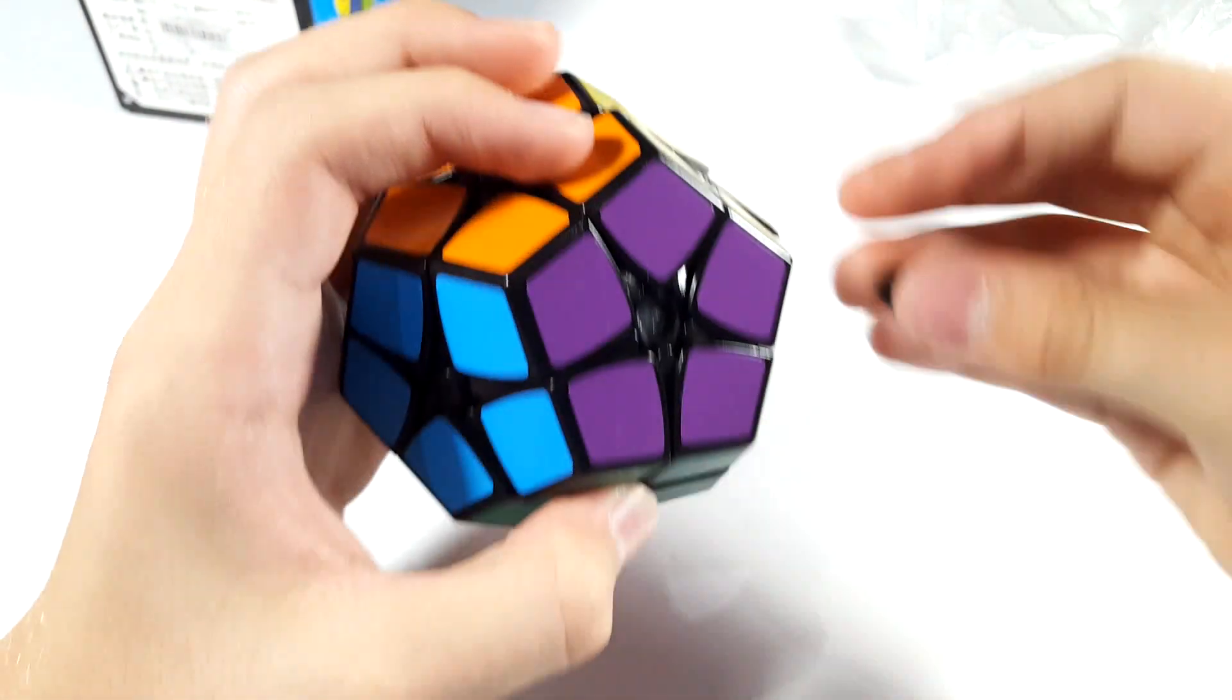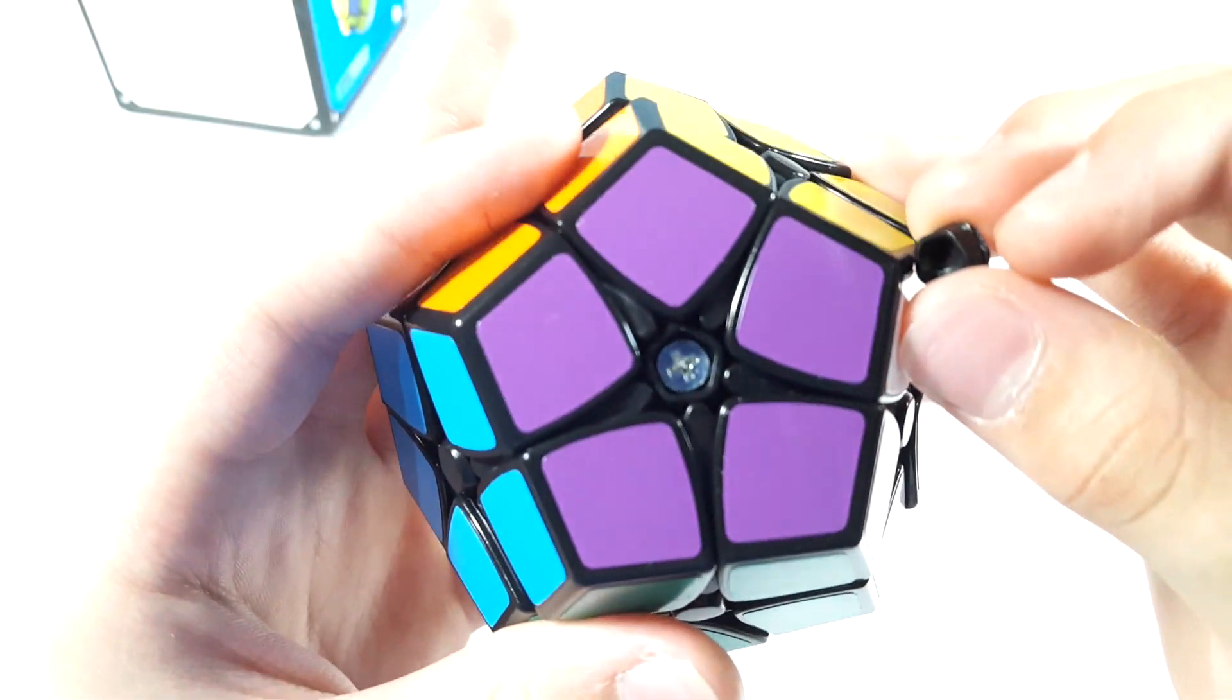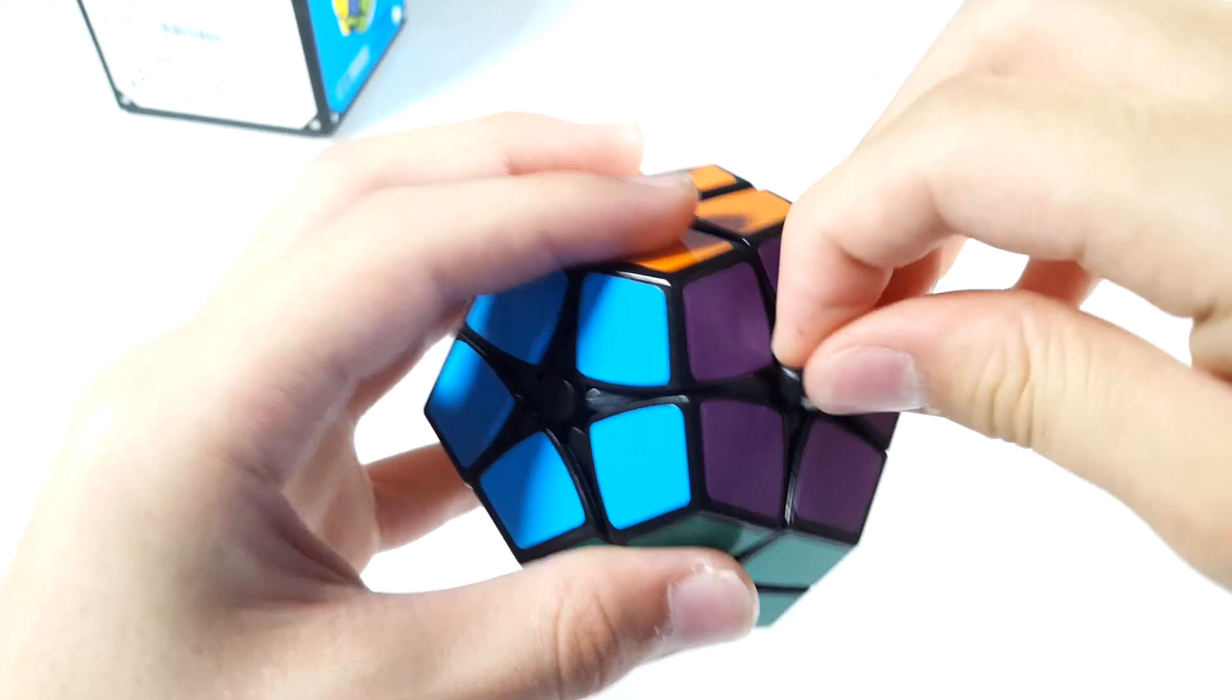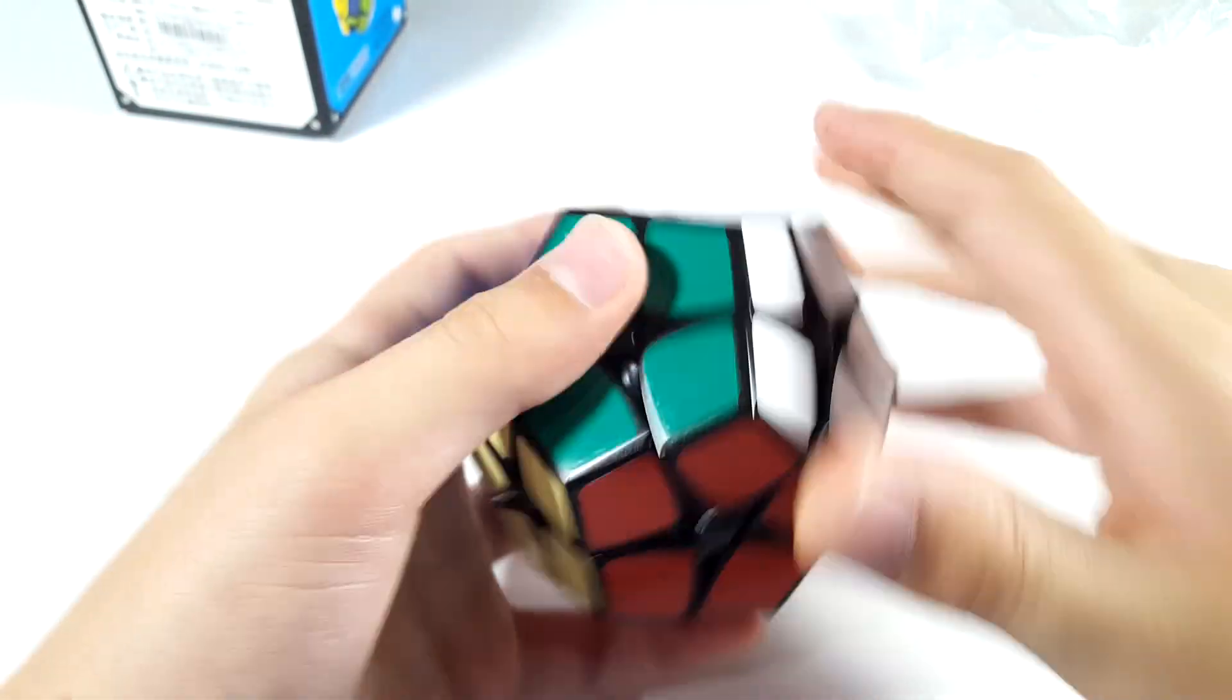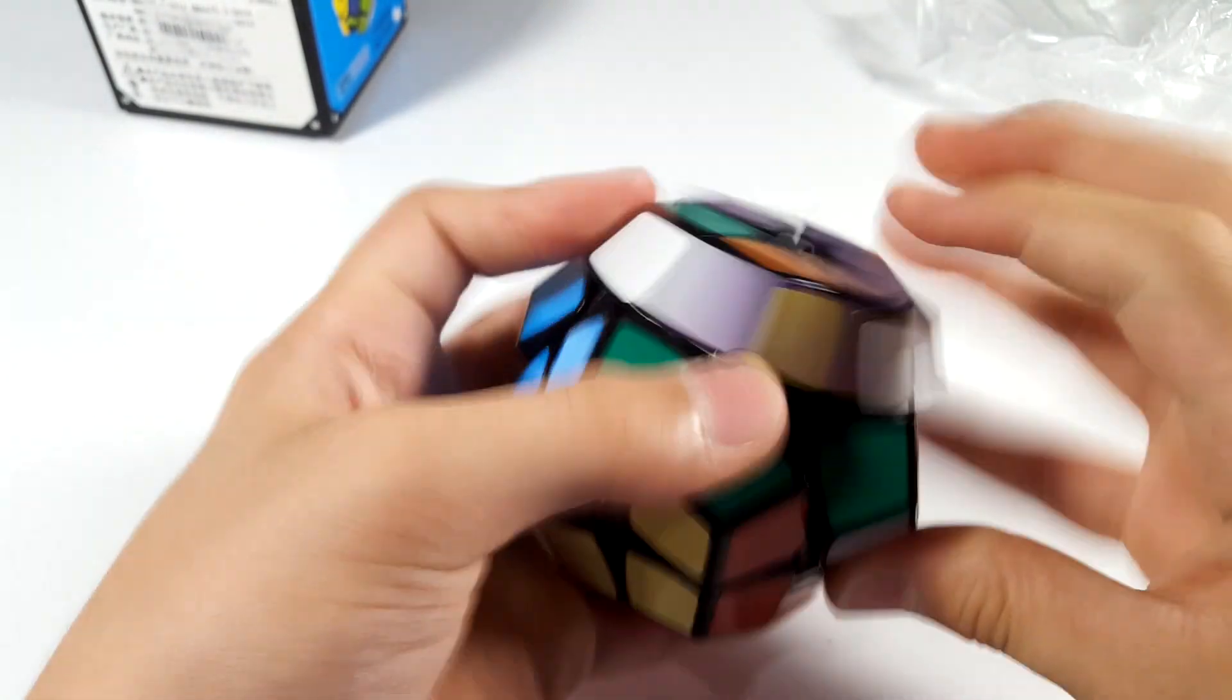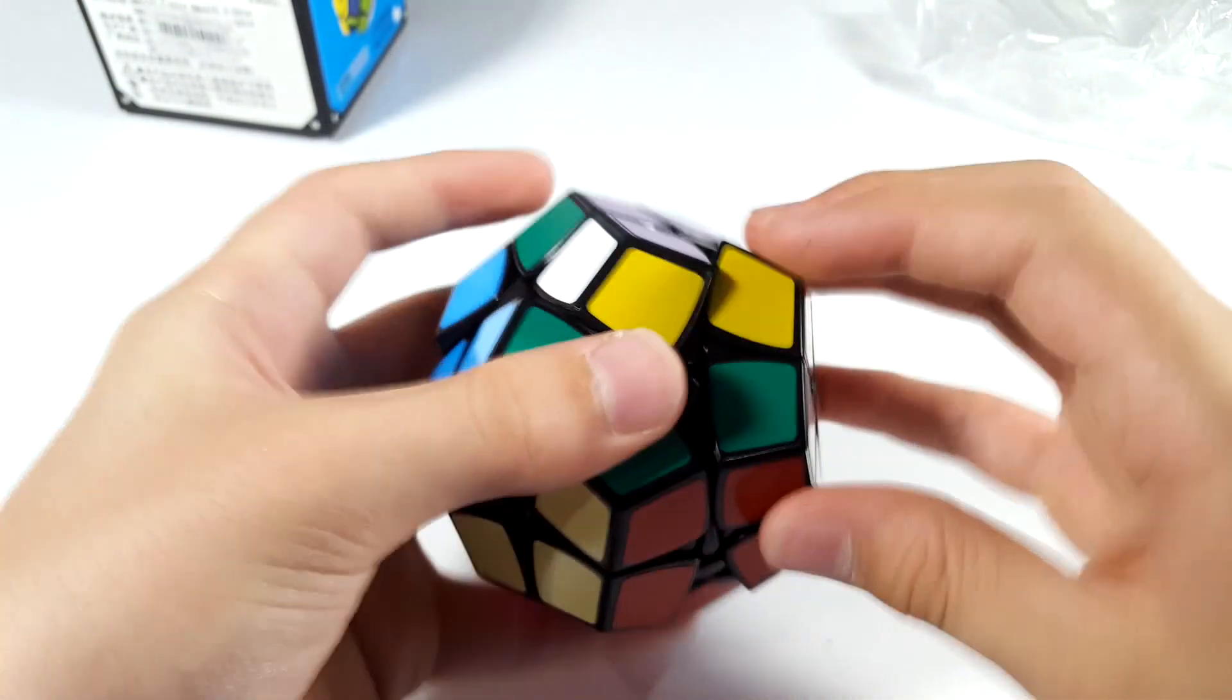There we go. Now, these little things are actually caps. Those centerpieces are actually caps, and you can see a screw down right there. So, I'm gonna put this back on. Good. So, this turns really, really well, and I am super excited to try some Kilaminx.